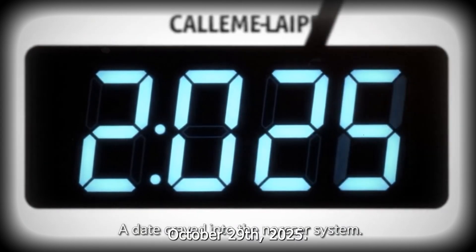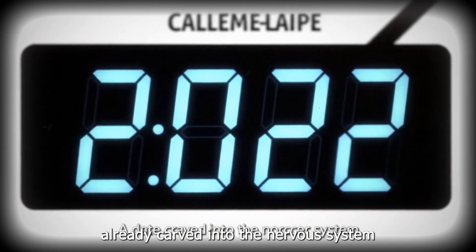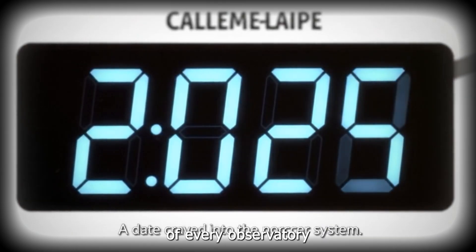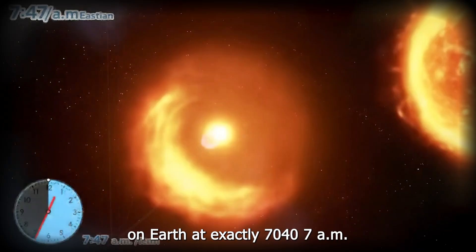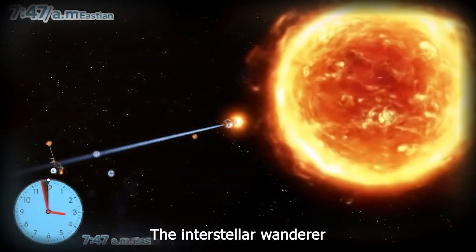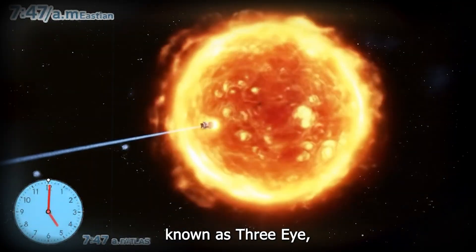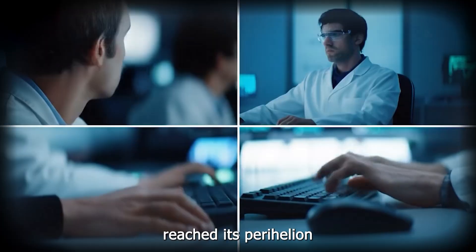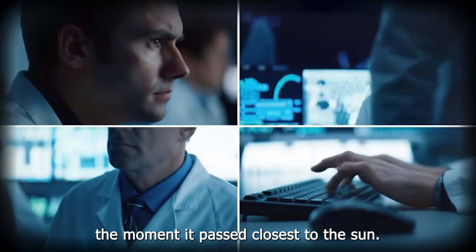October 29th, 2025, a date already carved into the nervous system of every observatory on Earth. At exactly 7:04 a.m. Eastern, the interstellar wanderer known as 3i Atlas reached its perihelion, the moment it passed closest to the Sun.